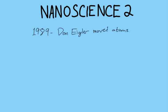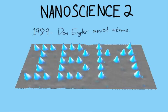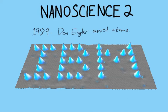In 1989, this guy named Don Eigler moved atoms — and here's a picture of that. Can you guess what company he worked for? This is 35 xenon atoms, and he chose xenon because it's a noble gas, so it does not interact with itself or anything else, which is why he can move them around like this. It was also very cold and it took a long time. But this is the first time that a human has moved individual atoms, which is kind of like a superpower.